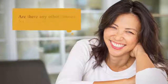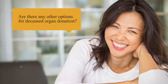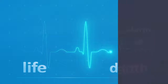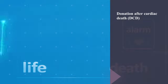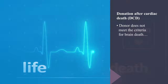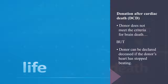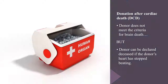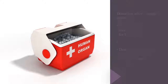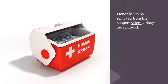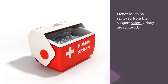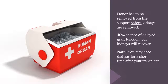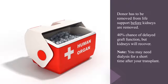Are there any other options for deceased organ donation? An ethically accepted practice of organ donation is known as donation after cardiac death, or DCD. Also known as non-heart beating donation, a donor can be declared deceased if the donor's heart has stopped beating, even if the donor is not brain dead. In such a situation, with consent from the family, the donor has to be first removed from life support before the kidneys can be removed. With DCD transplants, there remains a 40% chance of delayed graft function. You may also need dialysis for a short time after your transplant, but the kidneys will recover.